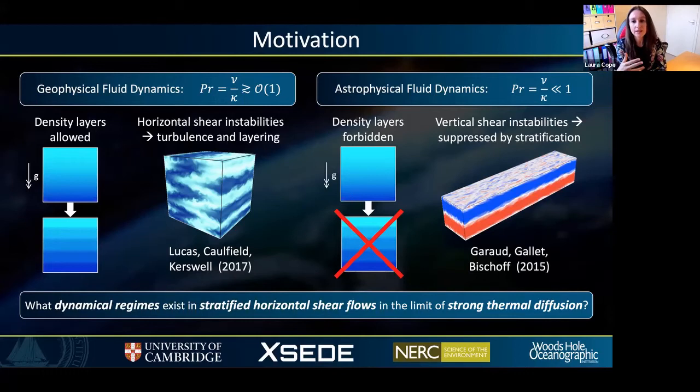Now going back to the example of the solar tachocline, there is growing observational evidence that turbulent mixing is present and that this does affect the life cycle of stars, and it's believed that shear instabilities provide one such source of this mixing. So since vertical shear instabilities are eliminated when the stratification is sufficiently strong, combining these ideas, in this talk I'm aiming to answer the following question: What dynamical regimes exist in stratified horizontal shear flows in the limits of strong thermal diffusion?